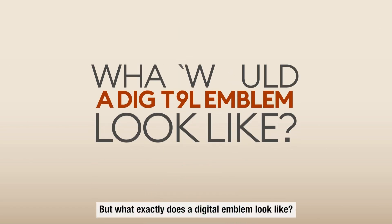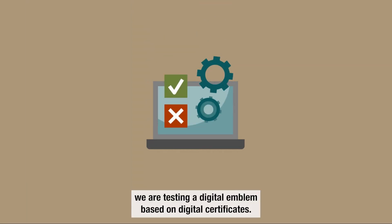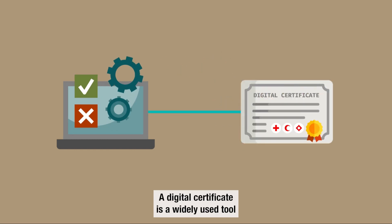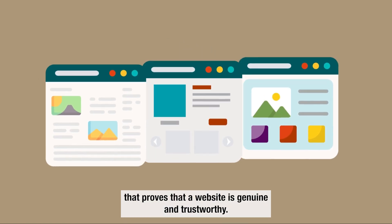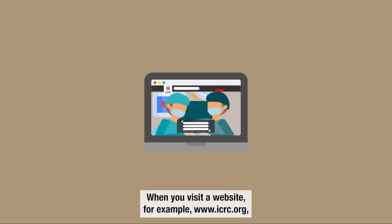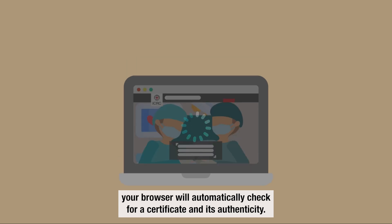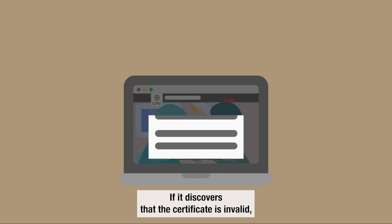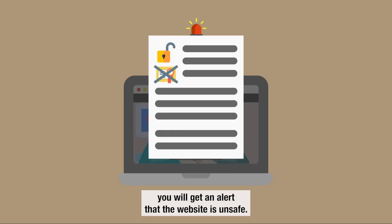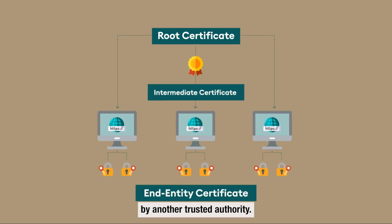But what exactly does a digital emblem look like? How does it signal protection? With research partners, we are testing a digital emblem based on digital certificates. A digital certificate is a widely used tool that proves that a website is genuine and trustworthy. When you've visited a website, for example www.icrc.org, your browser will automatically check for a certificate and its authenticity. If it discovers that the certificate is invalid, you will get an alert that the website is unsafe. To verify the authenticity of a digital certificate, your browser checks whether it is issued by a trustworthy authority, which in turn is verified by another trusted authority. This system is called a Certificate Chain.